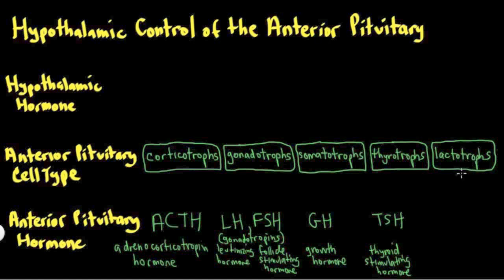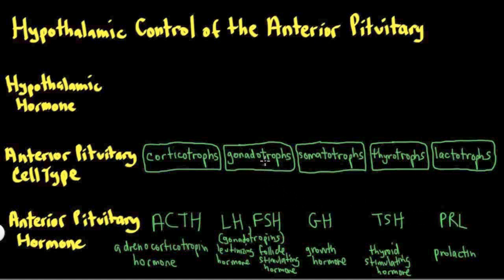Lactotrophs, the final cell type, release a hormone called prolactin, abbreviated PRL. Prolactin has effects on breast tissue to stimulate milk production. So these are all the anterior pituitary hormones, with note that the gonadotrophs release two hormones while all the other cell types release one.